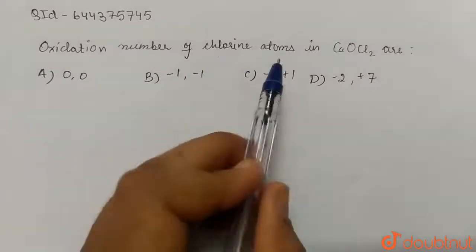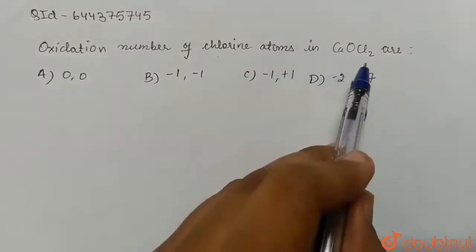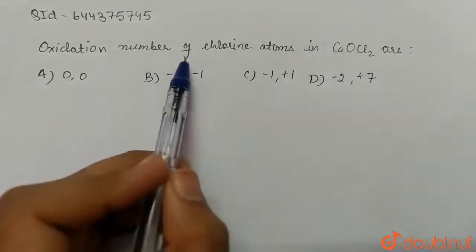Hello students, today's our question is: oxidation number of chlorine atoms in CaOCl2 are. So here we have CaOCl2 and we have to find out the oxidation number of two chlorine atoms here.